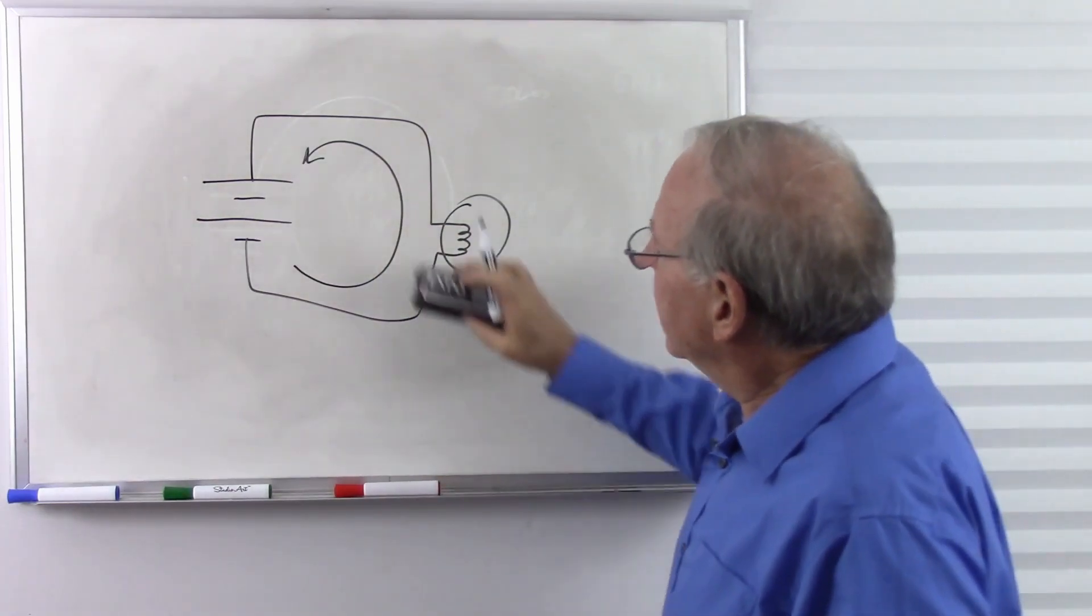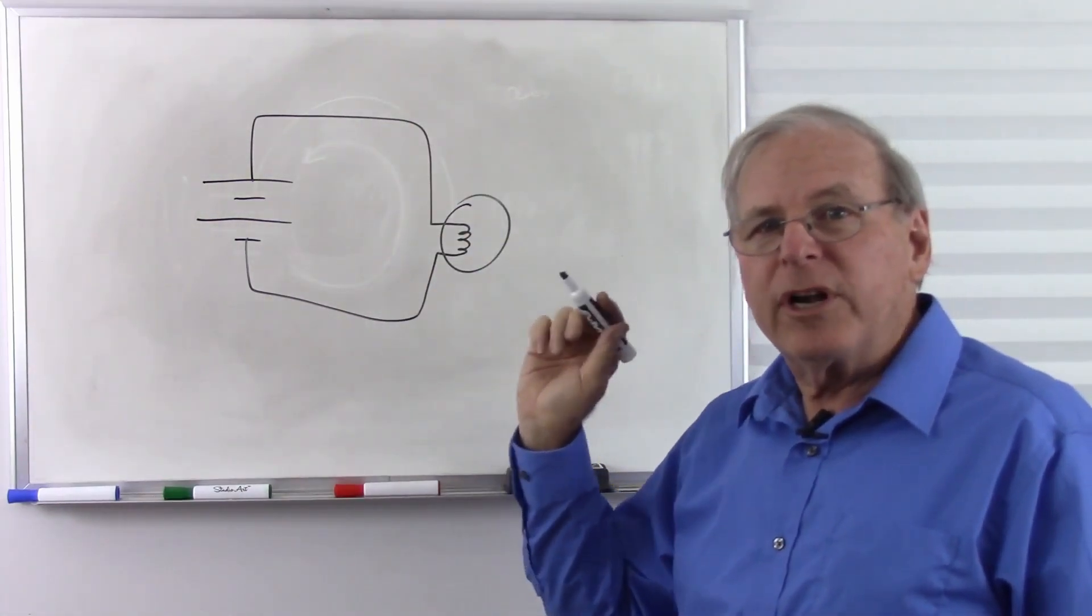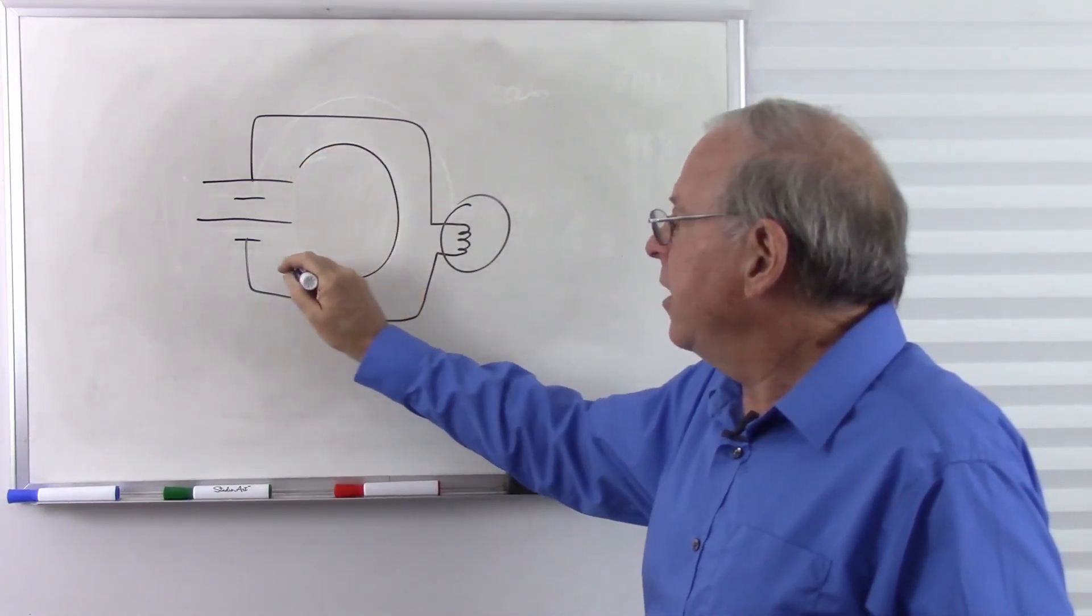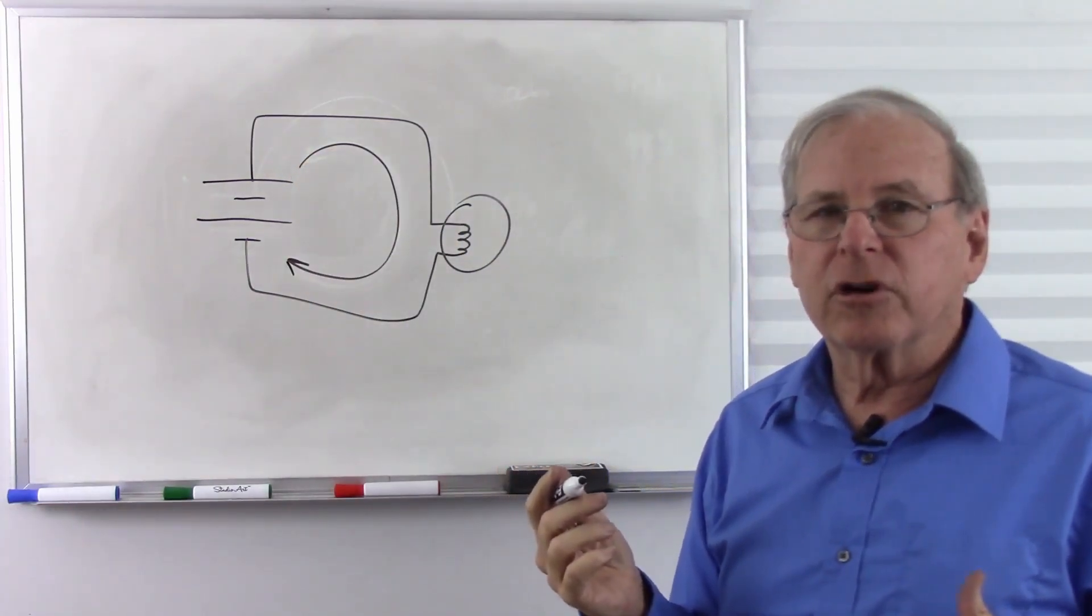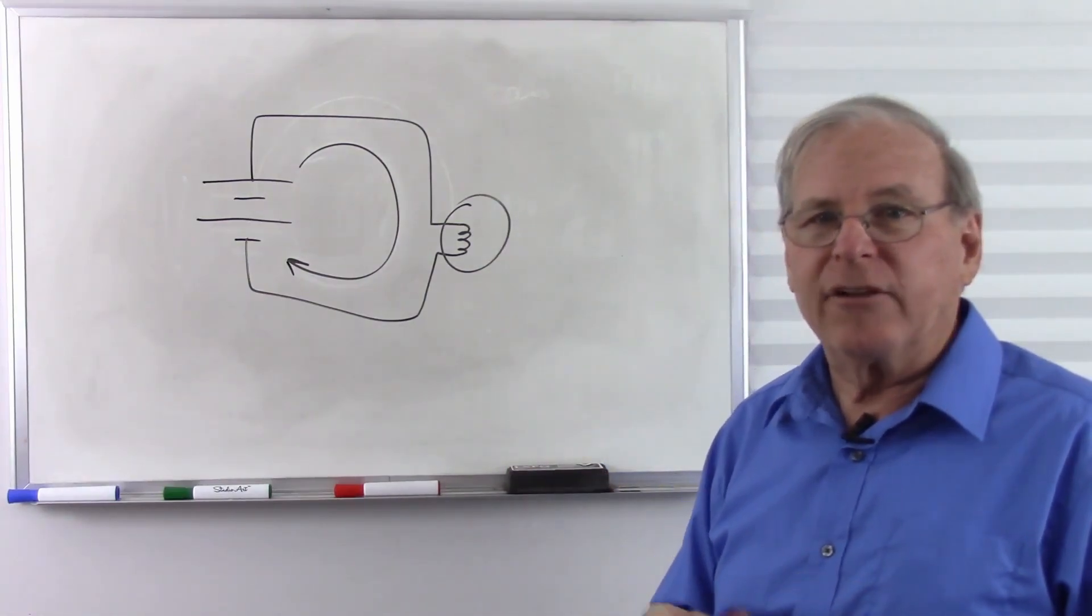But in the electronics industry and in academia, when we examine electrical circuits, we pretend that electricity flows from positive to negative, or what we call conventional current. And the reason we do this is because it makes a lot more sense to imagine it this way.